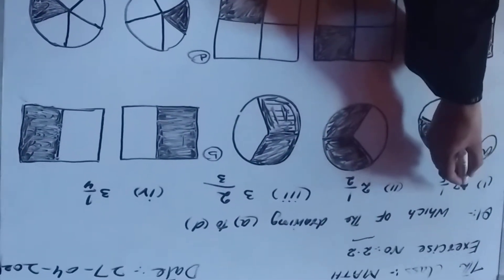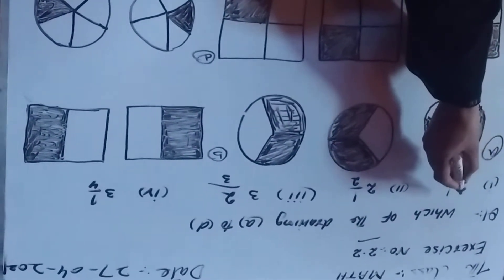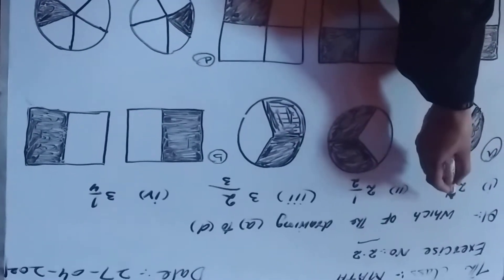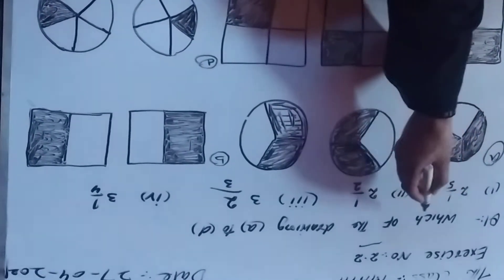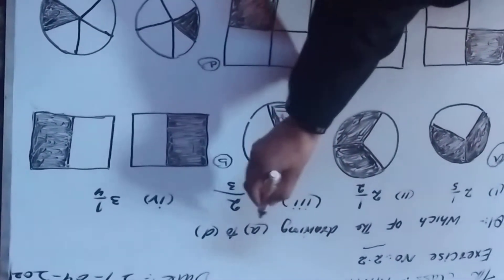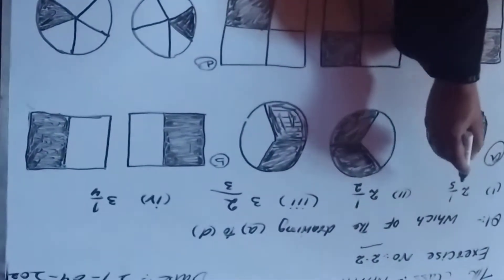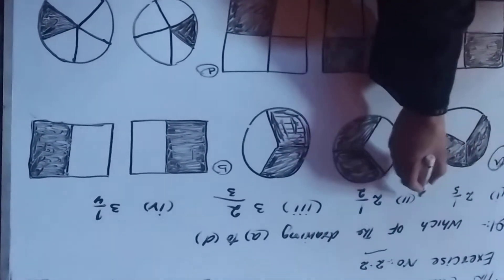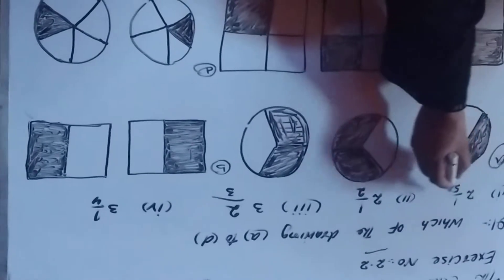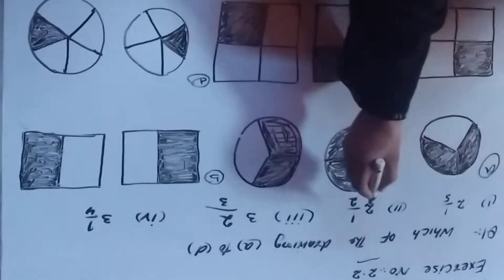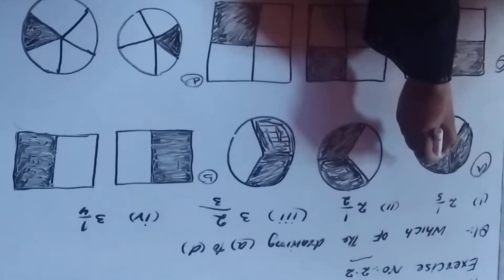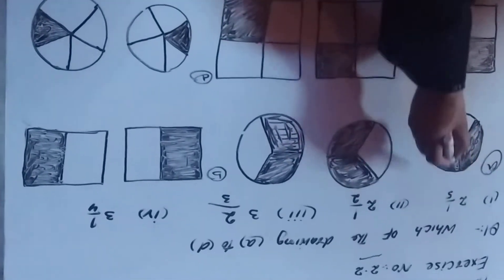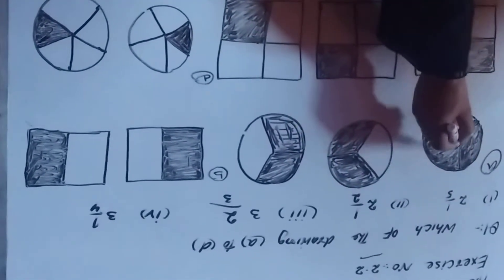The question number 1 of this exercise 2.2 is: which of the drawings A to D — if you have a drawing, you have parts, then you have to match them, which parts you have to match.